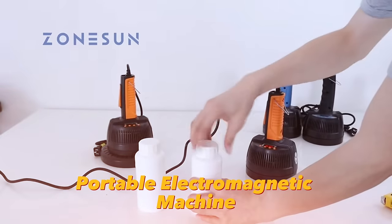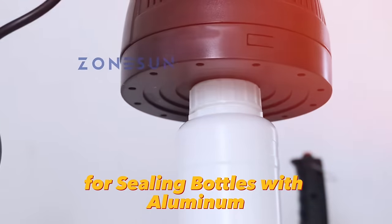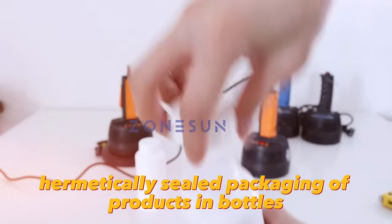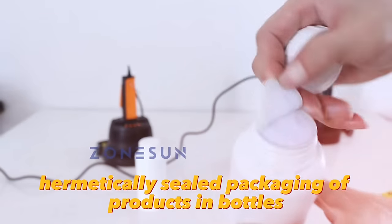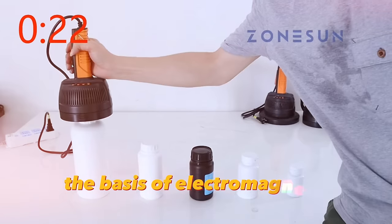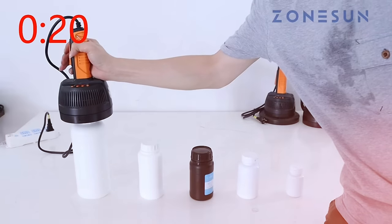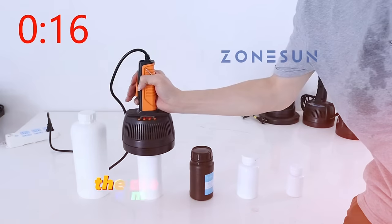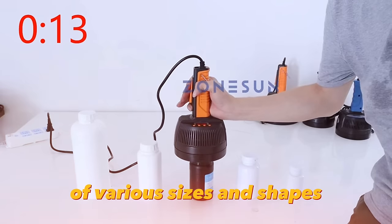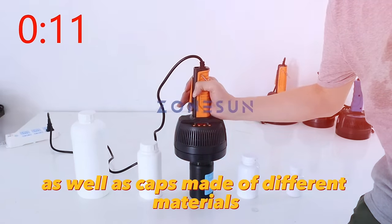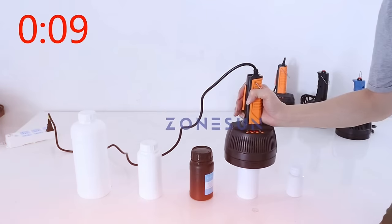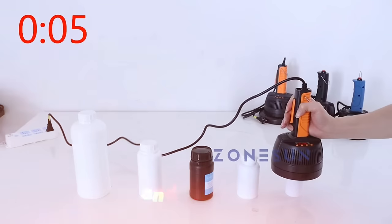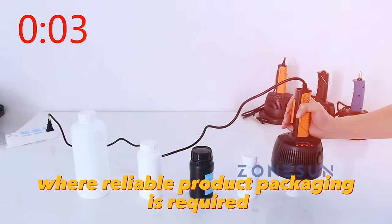Portable Electromagnetic Machine for sealing bottles with aluminum foil caps is compact and easy-to-use equipment designed for hermetically sealed packaging of products in bottles. The machine works on the basis of electromagnetic induction, which creates the thermal energy needed to seal the cap. The machine is capable of handling bottles of various sizes and shapes, as well as caps made of different materials. It is ideal for food processing plants, medical products and other areas where reliable product packaging is required.